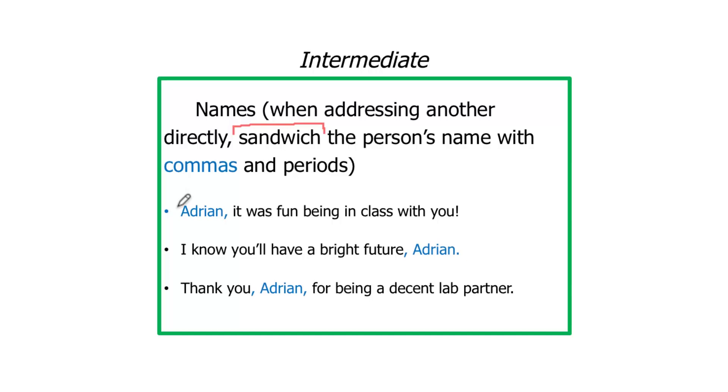Second, 'I know you'll have a bright future, Adrian.' Comma here, sandwich. Here, it's the end of a sentence, so we use a period. And then if it's in the middle of a sentence, 'Thank you, Adrian, for being a decent lab partner.' It doesn't have to just be a name. It could be like a title. You might say, 'thank you, professor, for giving me an A.' It doesn't have to be a person's name. The point is that you're referencing directly the person that you're talking to.